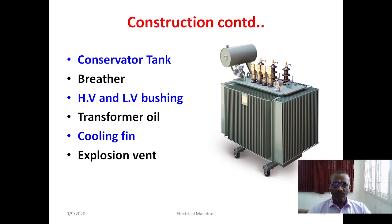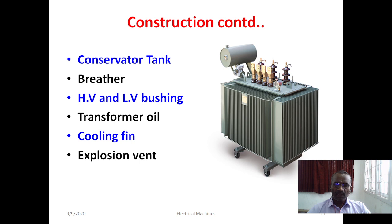We have HV and LV bushings. The main purpose of these bushings is to give supply to the transformer through the HV bushings if it is the primary side, and to take out the output voltage from the LV bushings if it is the secondary side. The transformer oil has high dielectric strength and is used for cooling as well as insulation between the winding and the tank. The oil absorbs the heat and it can radiate through the cooling fins or cooling tubes. Cooling fins are external fin-like or tube-like structures on the outer periphery of the tank, through which oil is circulated and the heat absorbed by the oil is radiated outward.